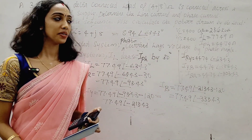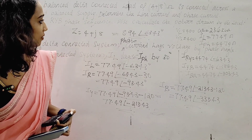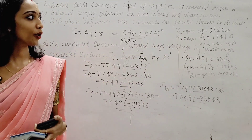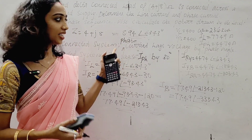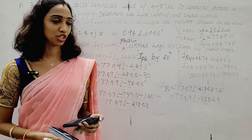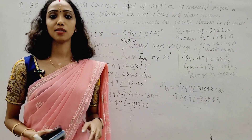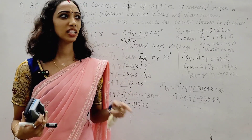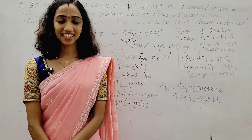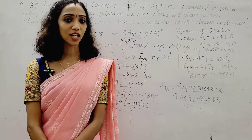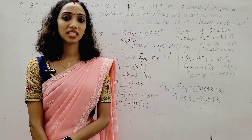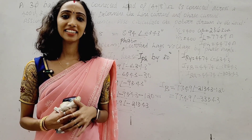This completes the balanced delta connected system example. We have also covered the balanced star connected system, and next will be the unbalanced star connected system. This is the Academy YouTube channel. If you like this video, please subscribe to our channel. If you have any doubts, please comment below. Thank you!